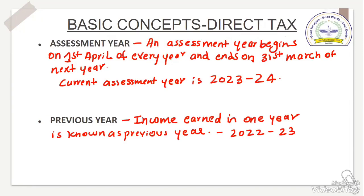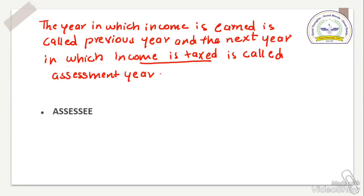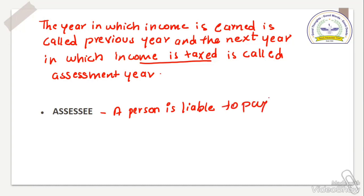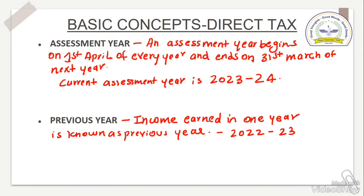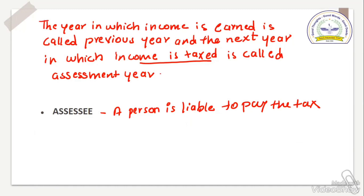This is important for assessment year and previous year. Now the definition of assessee — what is assessee? A person who is liable to pay the tax is known as assessee. We have covered three important concepts: one is assessment year, second is previous year, and third is assessee.